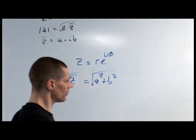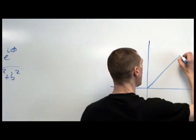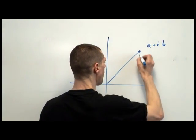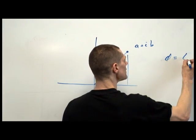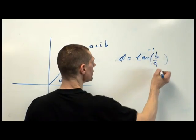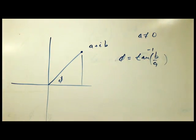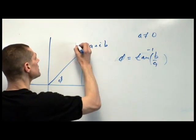Remember, so here is our point here. This is a plus ib, this is theta. We know that theta is the arc tangent of b divided by a. And I'm just assuming a is not equal to zero. If a is equal to zero, we can figure out what it is.